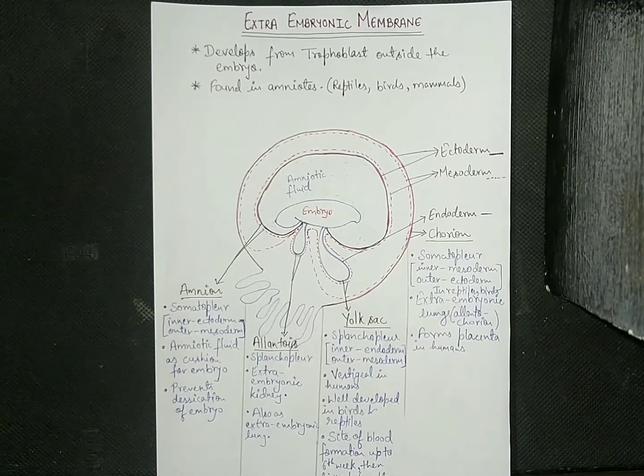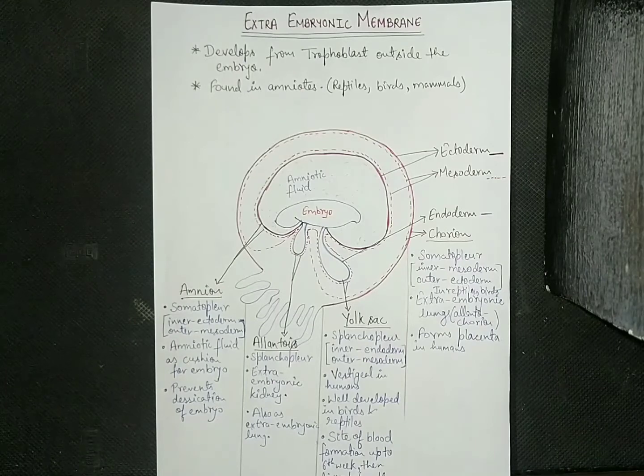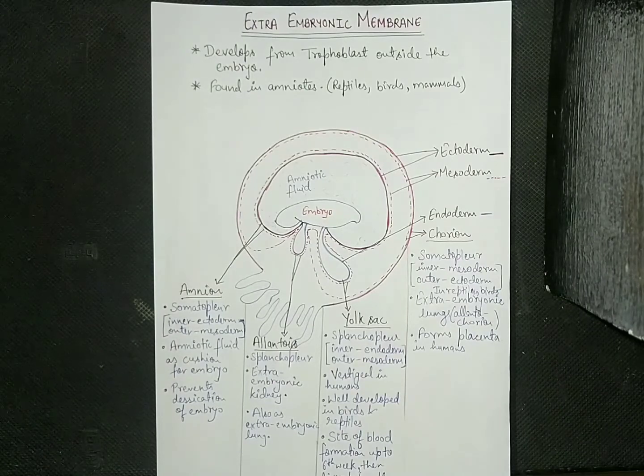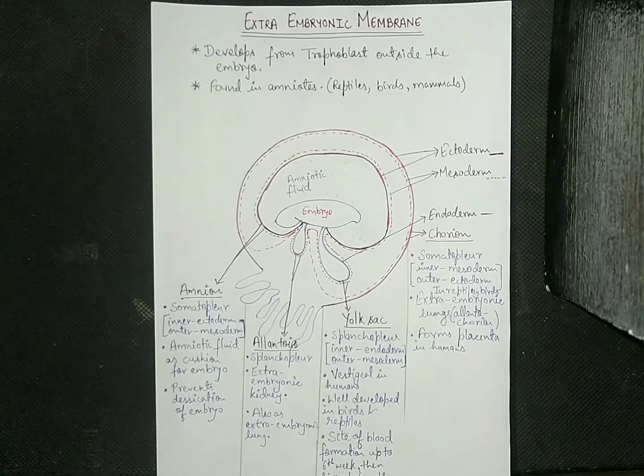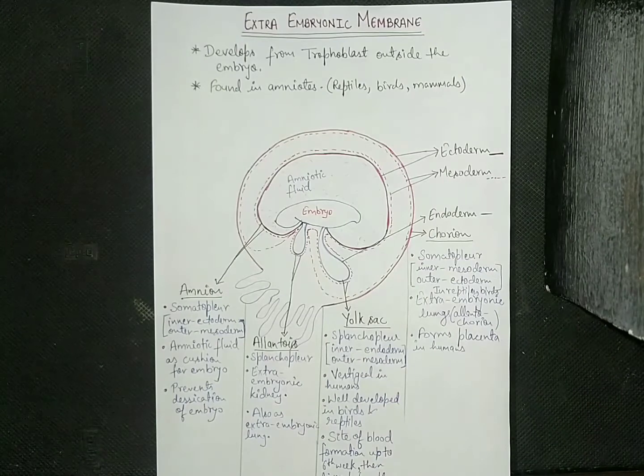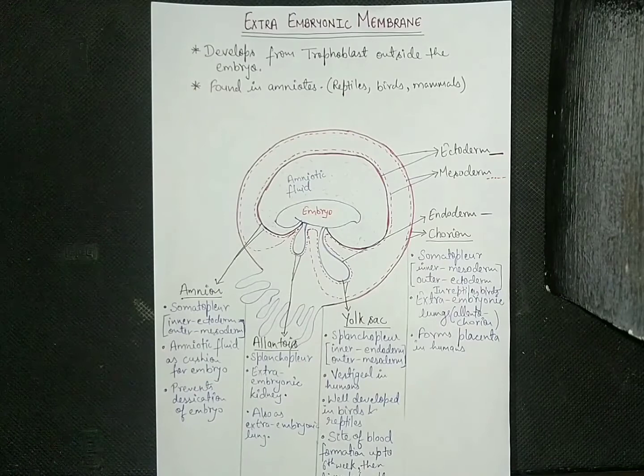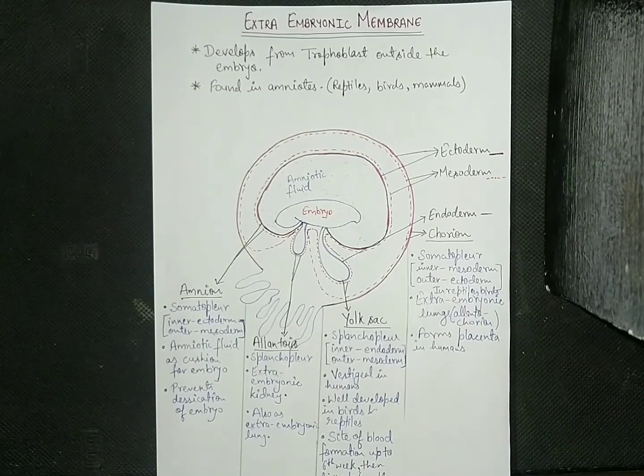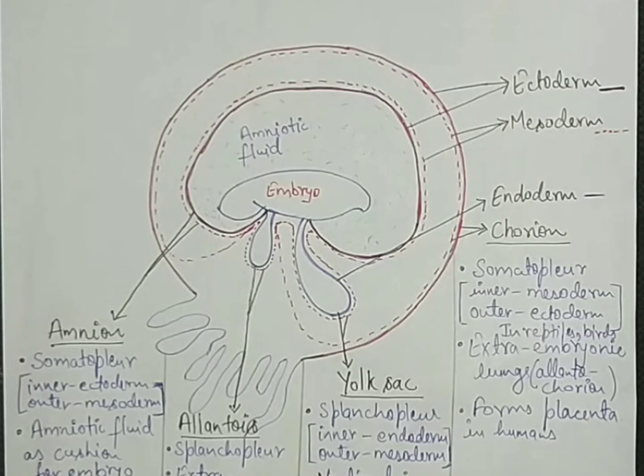Hello everyone, this is Shatrughan and in this lecture we will discuss the extra embryonic membranes. These membranes are formed outside the embryo from the trophoblast only in amniotes such as reptiles, birds, and mammals, and they perform specific functions. In this lecture we will study about these extra embryonic membranes in brief.